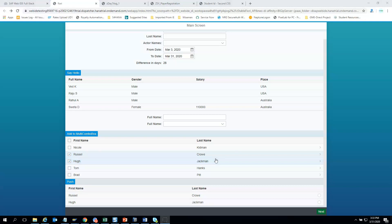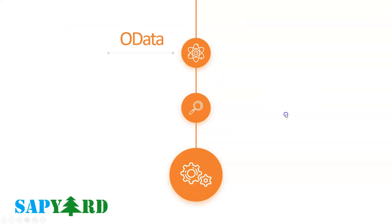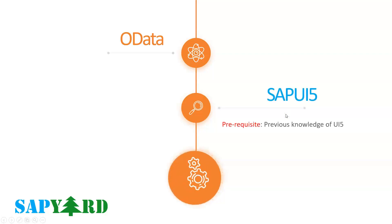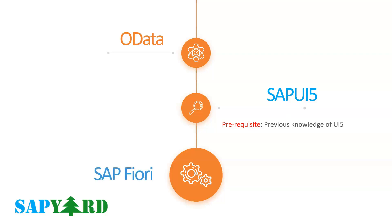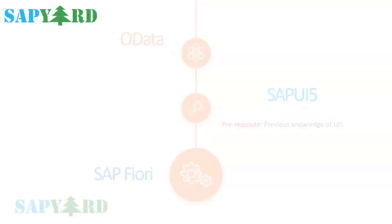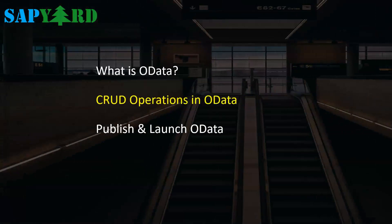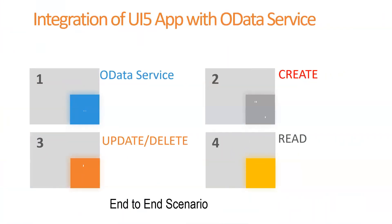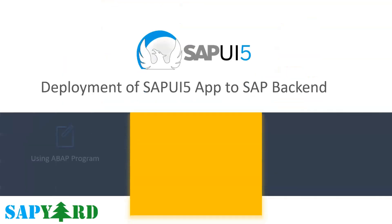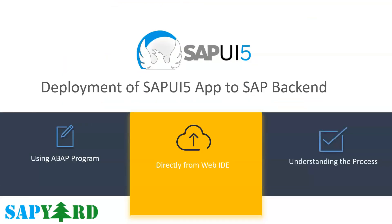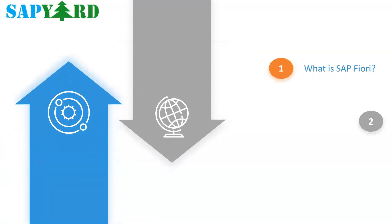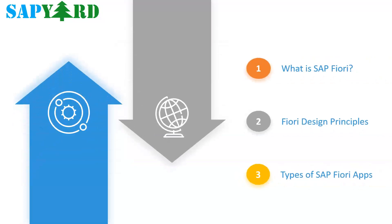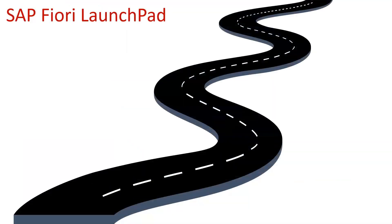In our introduction course, we have not covered OData. Therefore, in this new training, we will start with OData. We will cover CRUD operations along with testing and debugging of OData. ABAP developers will find it very easy. Next, we will integrate the UI with OData services and perform CRUD operations in the SAP backend. All our UI development will be done using Web IDE. We will learn how to deploy using ABAP programs and also using Web IDE. Then we will move to SAP Fiori, its design principles and types, and learn how to make use of the SAP Fiori library.